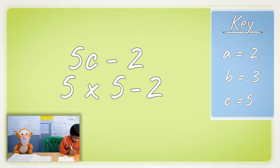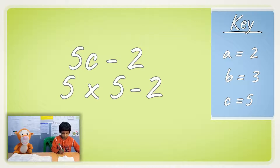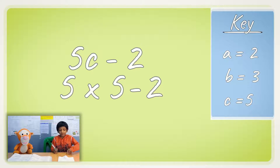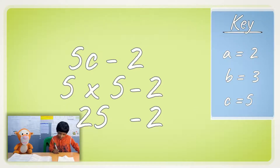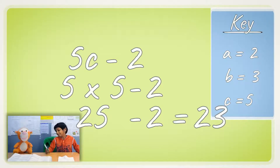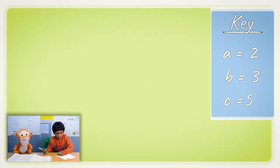5 times 5 is 25. So we replace C with 25. 25 minus 2 is 23. Let's do this one next.